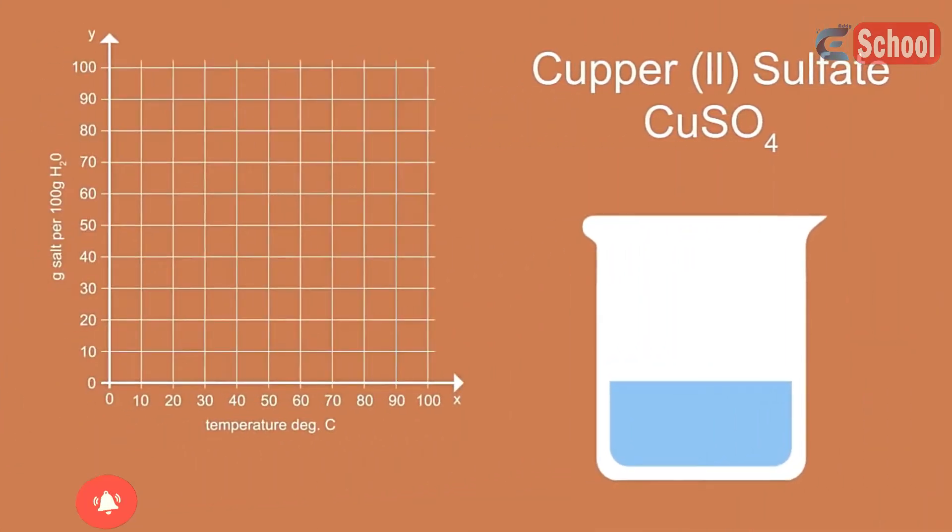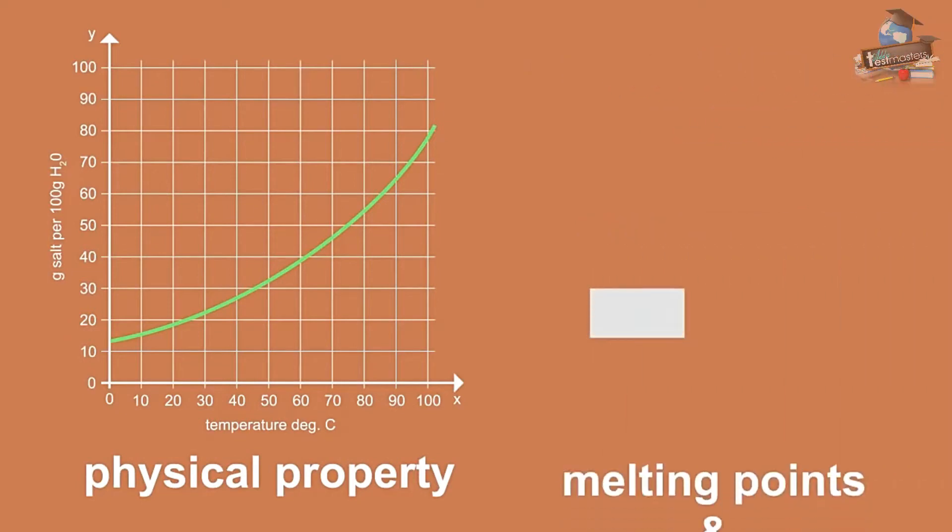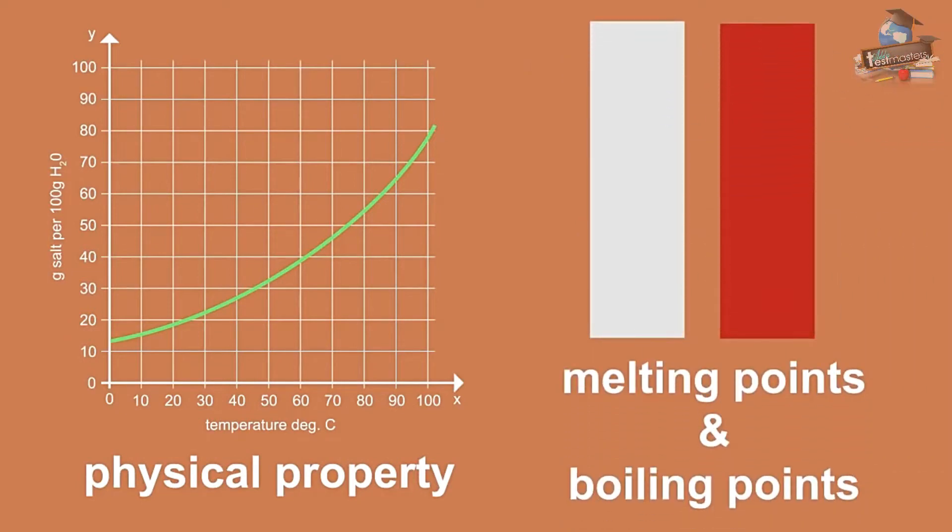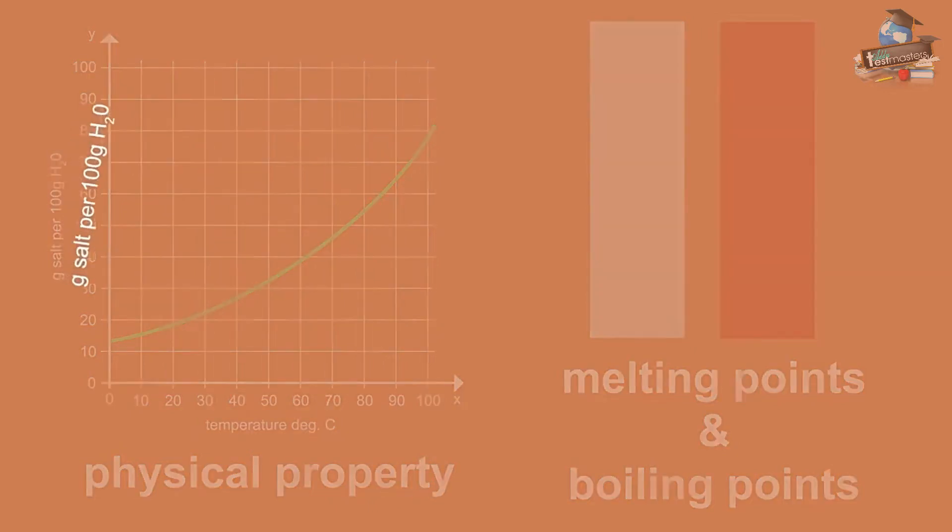In other words, copper(II) sulfate has a higher solubility in water. This is actually a physical property of a substance, much like a substance's melting point and boiling point. The solubility of a salt is usually measured as grams of salt per, let's say, 100 grams of water.